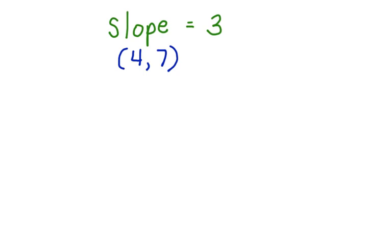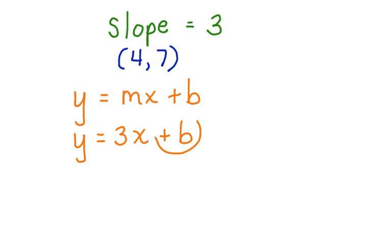Well, first, let's use slope-intercept form. That's the easiest way to begin. y equals mx plus b, where m is the slope and b is the y-intercept. We know the slope, so we can say y equals 3x plus b. We don't know b. This is what's missing.